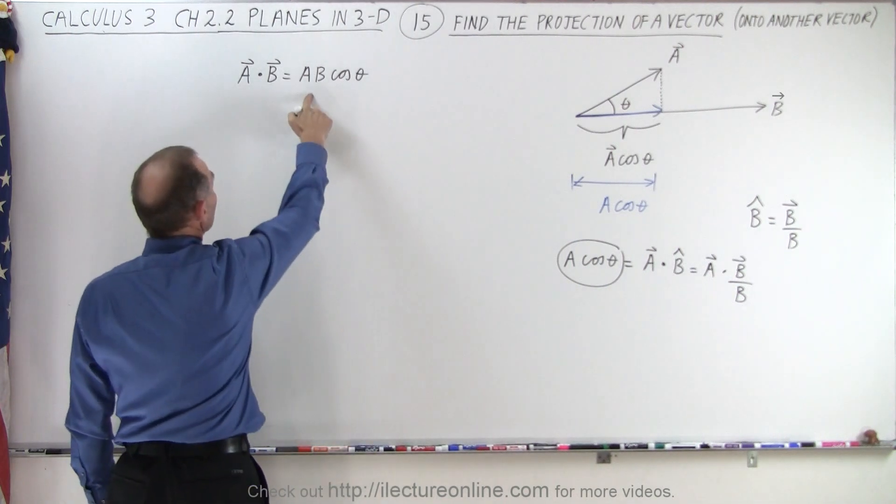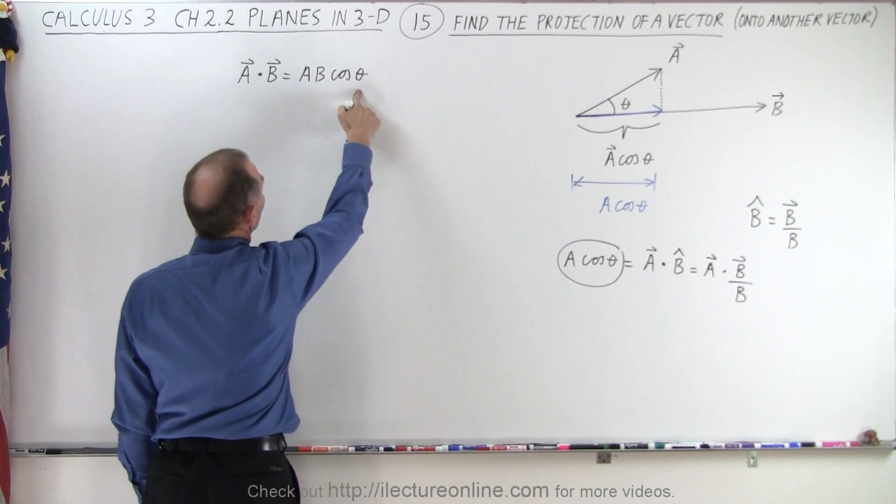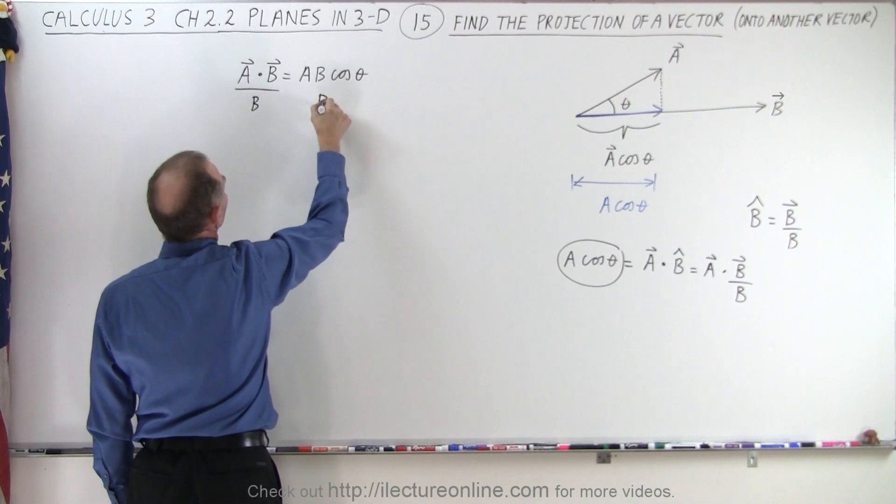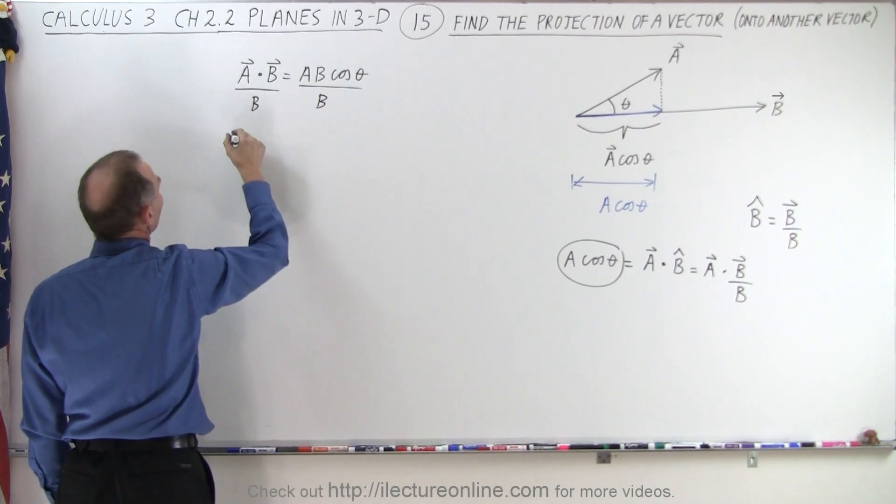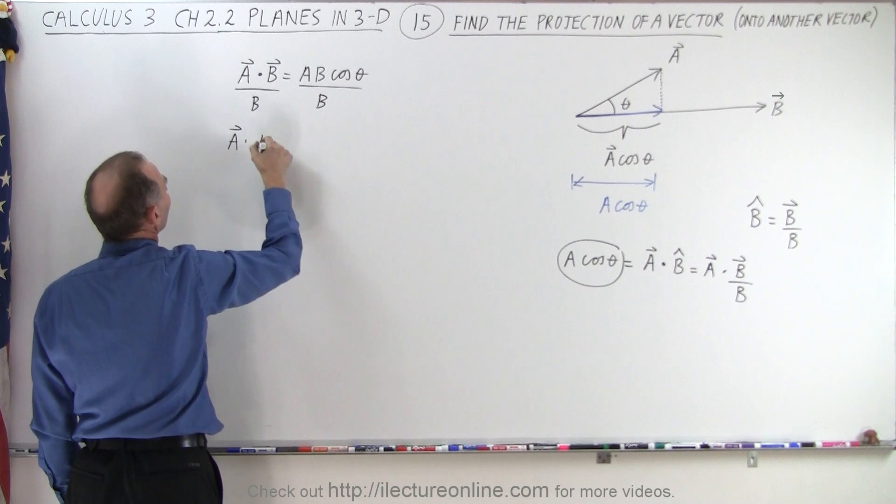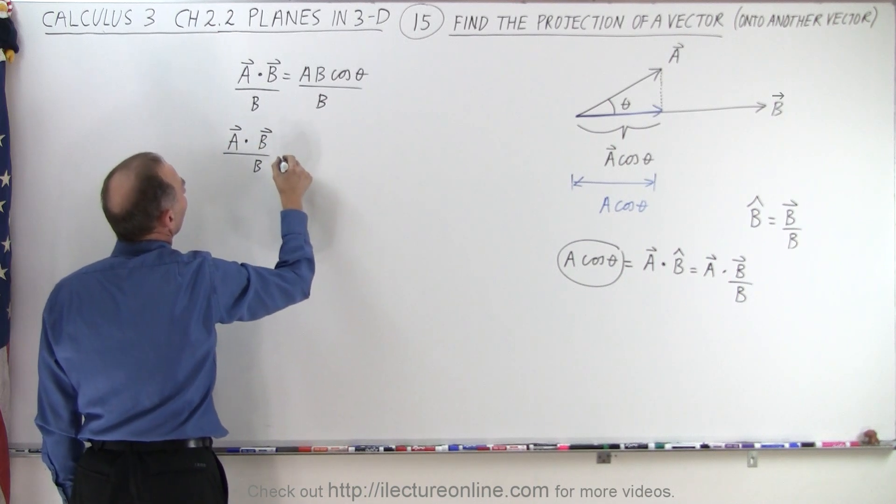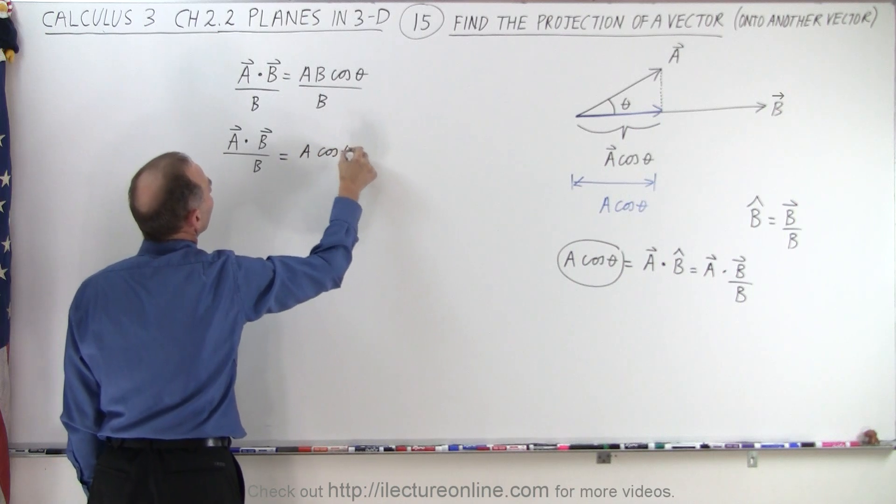If we take a look over here, and we want to solve for A times cosine theta, we divide both sides by B. And notice, then on the left side, we get A dot B divided by the magnitude of B, and that is therefore equal to A times the cosine of theta.